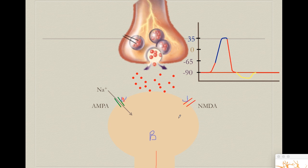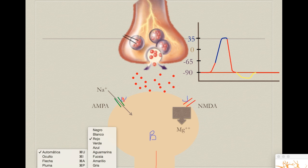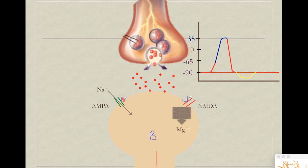However, we have a second glutamate receptor that doesn't work at first: the NMDA receptor. NMDA receptors are extremely important, but they do not function when we first release glutamate because they are blocked. Even if glutamate came and tried to activate the receptor, sodium tried to get in but there was something blocking the way — a magnesium molecule. Magnesium does not allow the receptor to generate its function.